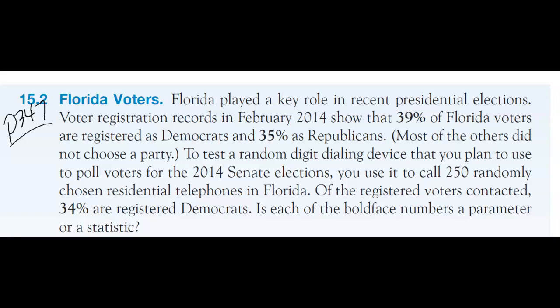So if you look at this example: Florida played a key role in recent presidential elections. Voter registration records in February 2014 show that 39 percent of Florida voters are registered as Democrats and 35 percent as Republicans. Because that is from the voter registration records in Florida — the big picture — these are both parameters, P. So you would identify those as P for parameter.